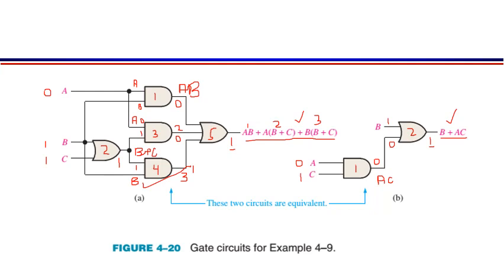Ab jo complex expression se jo result aayega woh equal hoga simplified expression ke result ke saath — yaani dono ke results same honge. Circuit design karne ke liye: expression ki pehli term AB hai, A aur B do inputs hain jo Gate 1 (AND gate) se pass ho rahe hain, aur Gate 1 ki output hogi AB ki form mein. Doosri term mein A(B+C) hai, yaani A multiply ho raha B+C ke saath.